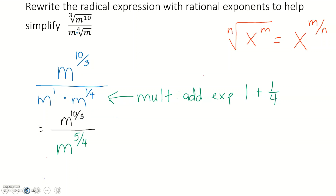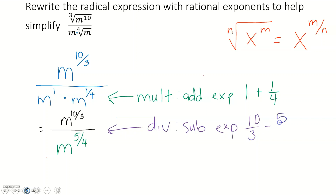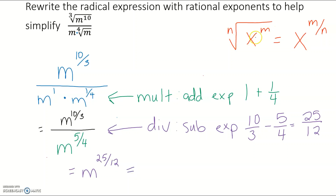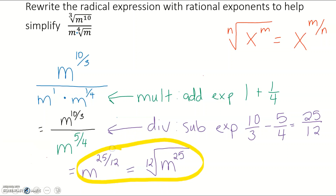Now our numerator is just 1m and our denominator is just 1m, so we can take care of that division part. When we're dividing we subtract our exponents. So if we take 10/3 minus 5/4 — feel free to get a calculator — that would be 25/12. Our answer equals m to the 25/12 power. If you want to rewrite it in radical form, 12 would be the root and 25 is the power, so the 12th root of m to the 25th.